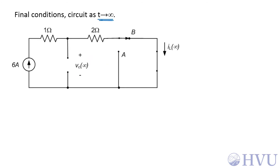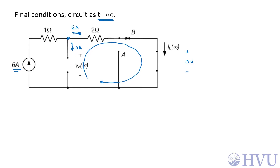Finally, we want the final conditions as t goes to infinity. Again, the forcing function is constant, so capacitors look like open circuits and inductors look like short circuits. The capacitor has no current, and the inductor has no voltage. By KCL, 6 amps must flow through the inductor, so I sub L at infinity is 6 amps. By KVL around this loop, V sub C at infinity equals 2 ohms times 6 amps, which is 12 volts. Those are our final conditions.